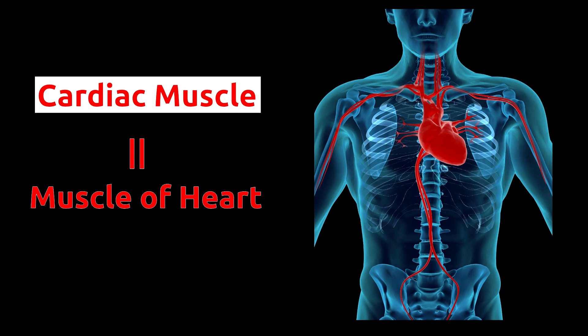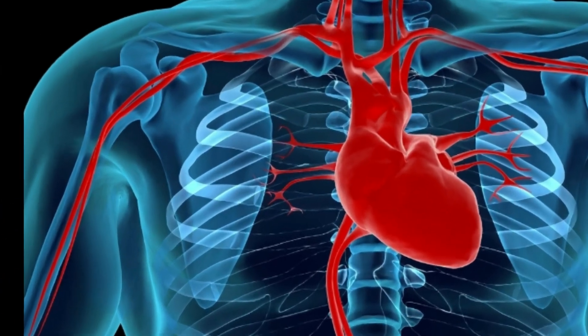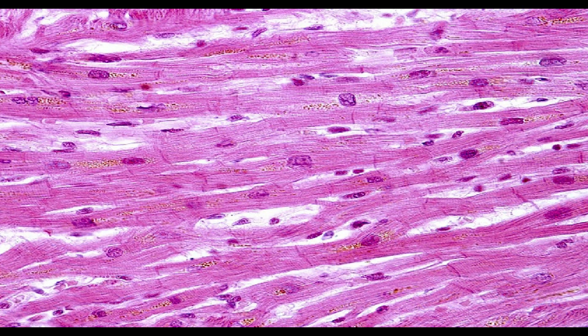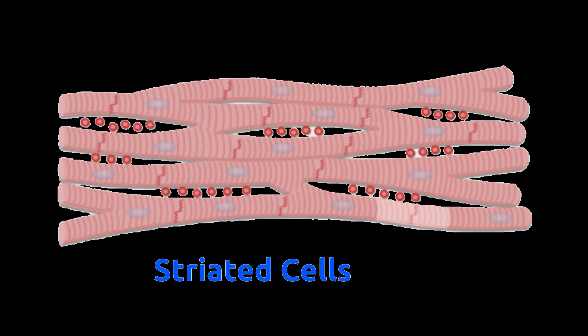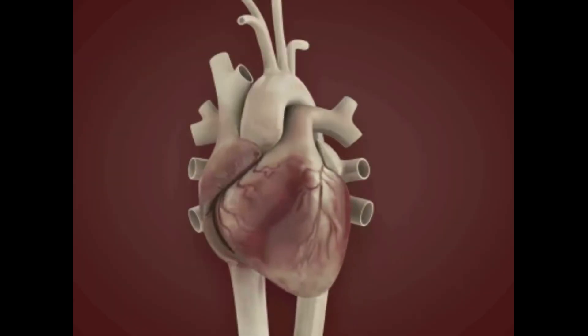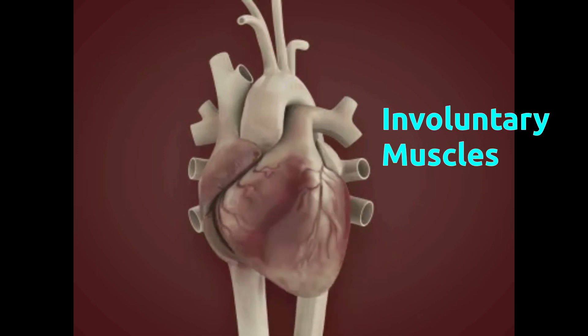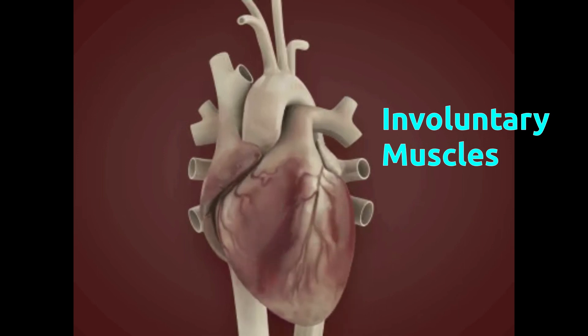Cardiac means heart, so cardiac muscle is the muscle of our heart. Similar to striated muscles, cells in cardiac muscles are striated with dark and light bands and have multiple nuclei. Similar to non-striated muscles, the nuclei of cardiac muscle cells are located at the center part of the cell. Our heart muscles contract and relax continuously and we cannot control this movement. Thus cardiac muscles are involuntary muscles.